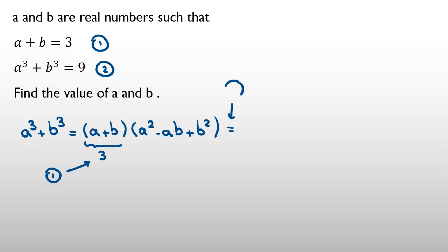And by the second equation, I know it is 9. So I can conclude 3 times (a squared minus ab plus b squared) equals 9. Then we can divide both sides by 3. It will be a squared minus ab plus b squared equals 3.